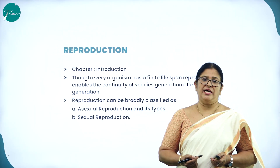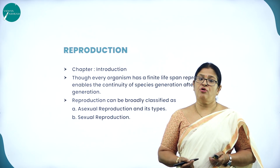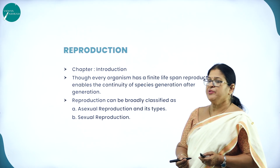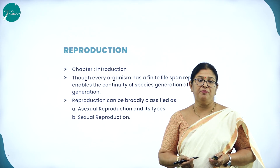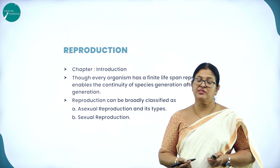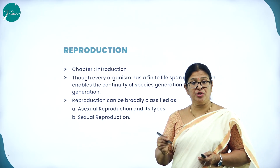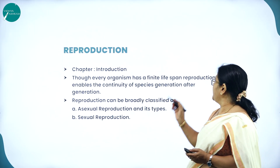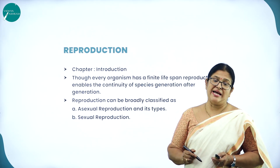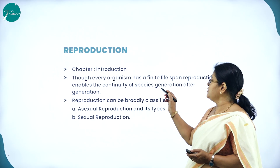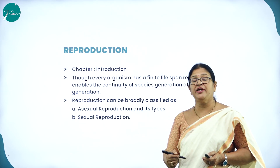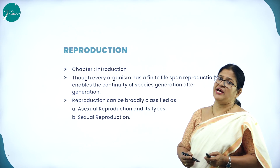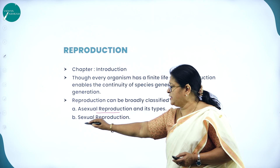Reproduction is a very important feature of all living organisms. Reproduction is a biological process where an organism gives rise to young ones or offspring similar to itself, and these offspring further grow, mature, reproduce, and ultimately die. Every organism has a finite lifespan, and reproduction enables the continuity of species generation after generation. Reproduction can be broadly classified into two types: Asexual Reproduction and Sexual Reproduction.